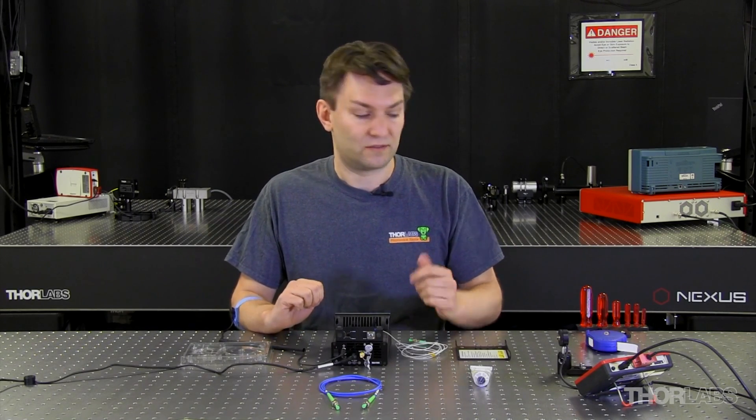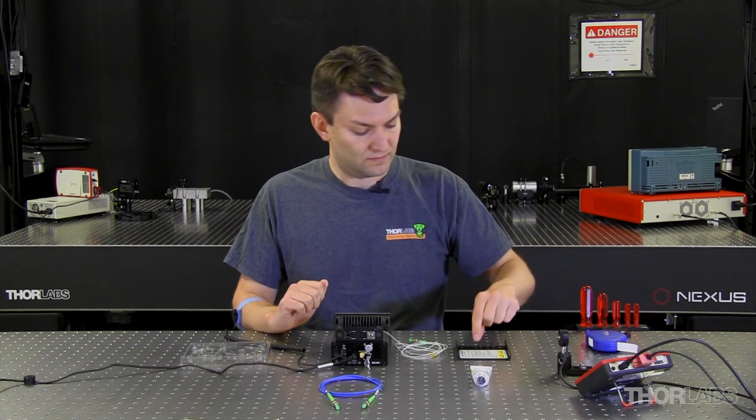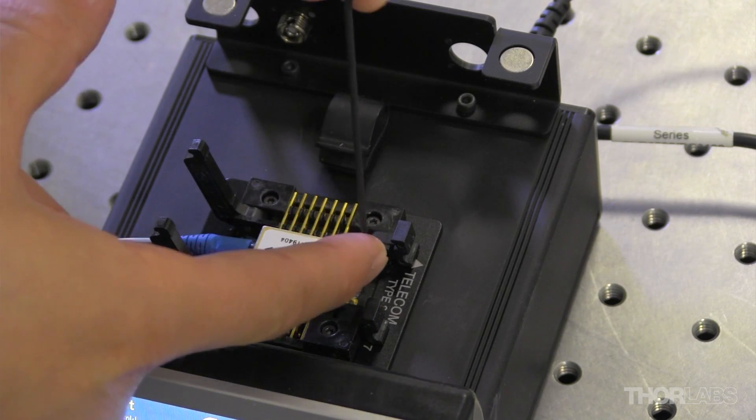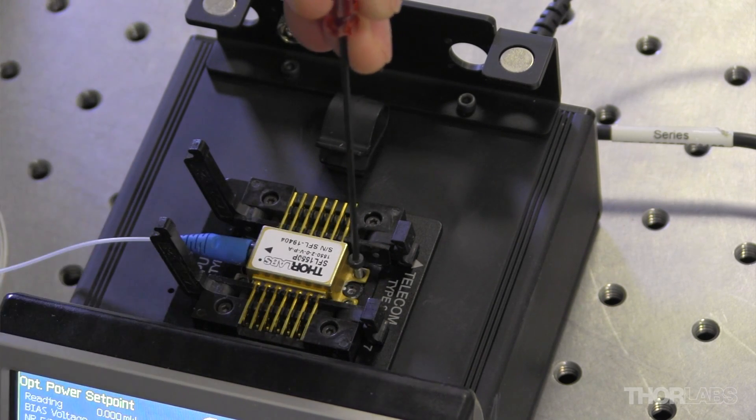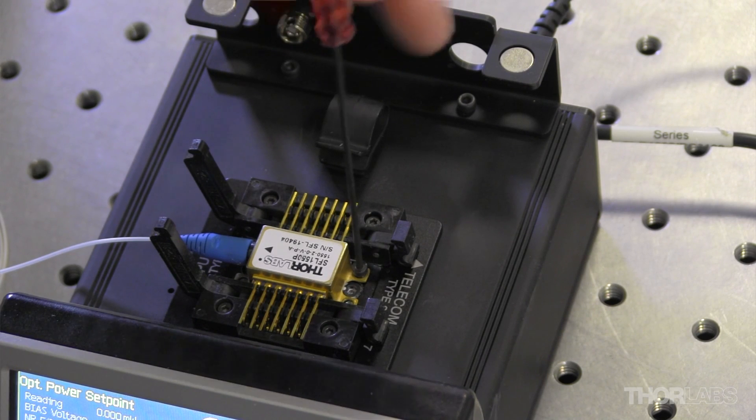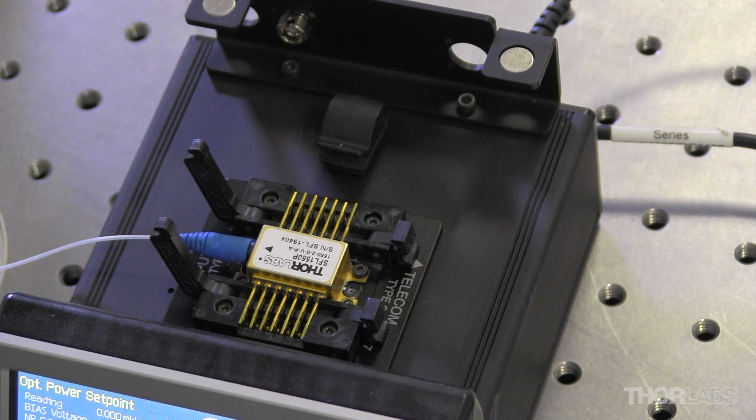Once that is done, I'm going to use the small screws to secure the laser in place. Now these screws will make sure that we maintain good thermal contact between the bottom of the laser and the metal of the heat sink.